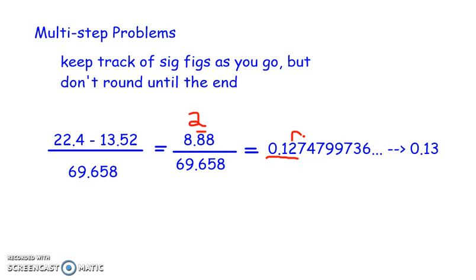So when you're adding and subtracting, round to the fewest number of decimal places. When you're multiplying or dividing, round to the fewest number of significant figures.